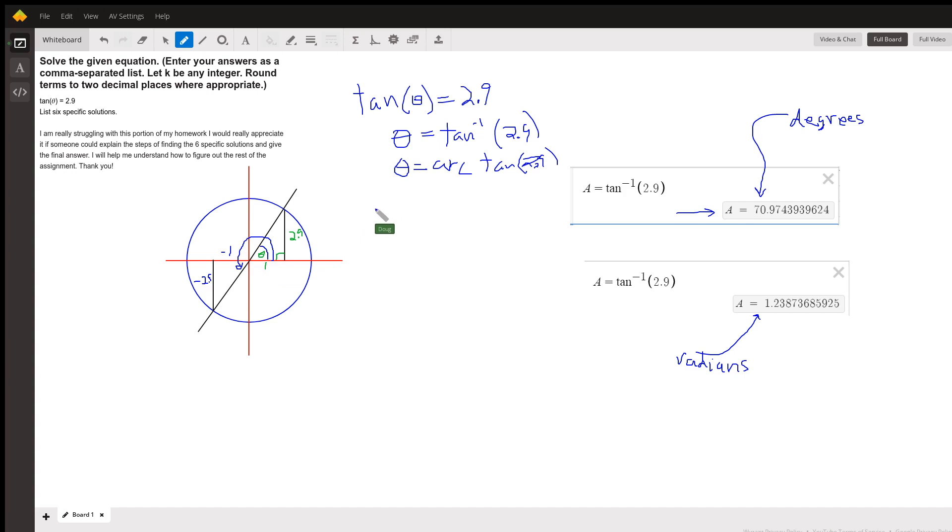The period of the tangent function is 180 degrees or pi radians. So we could say that theta equals 70.97 plus 180k degrees, where k is any integer.